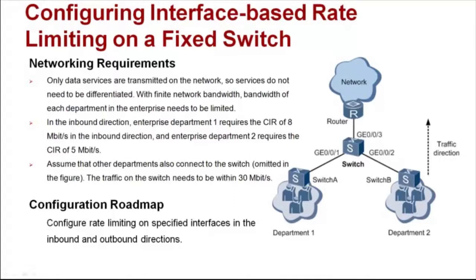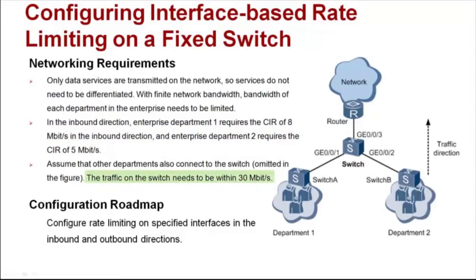As shown in the figure, only data services are transmitted on the network. The bandwidth of each department in the enterprise needs to be limited. In the inbound direction, Enterprise Department 1 requires a CIR of 8 Mbps, and Enterprise Department 2 requires a CIR of 5 Mbps. Other departments also connect to the switch, and the traffic on the switch needs to be within 30 Mbps.